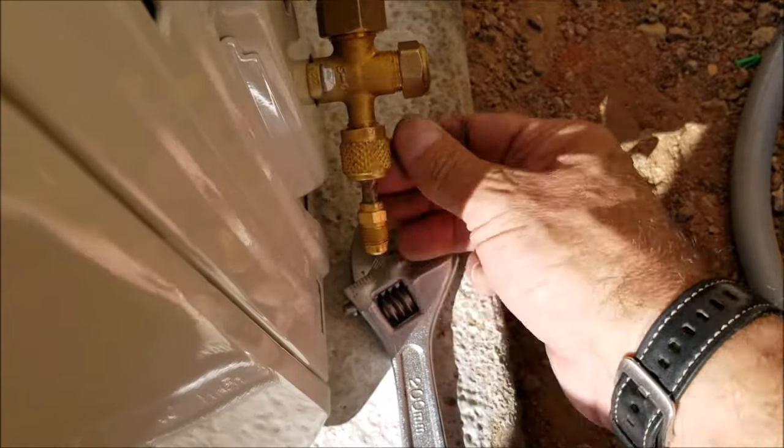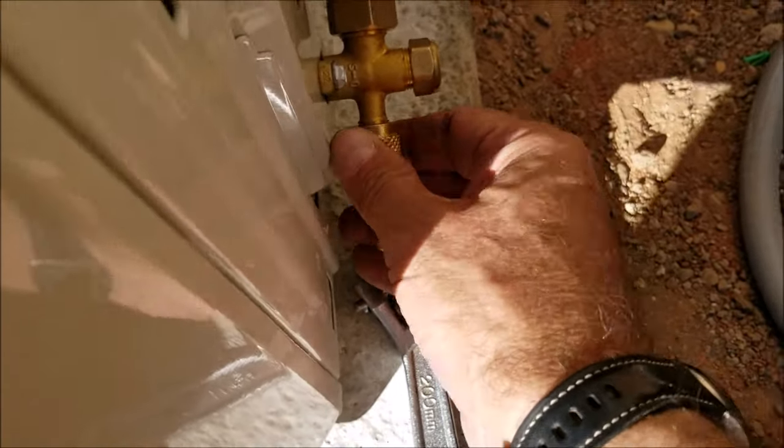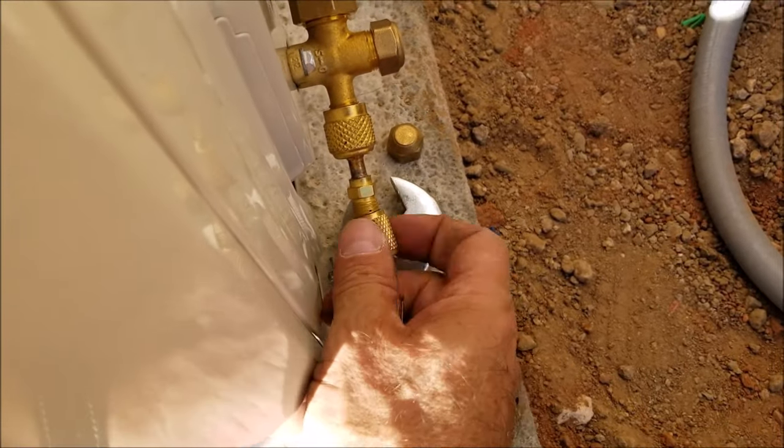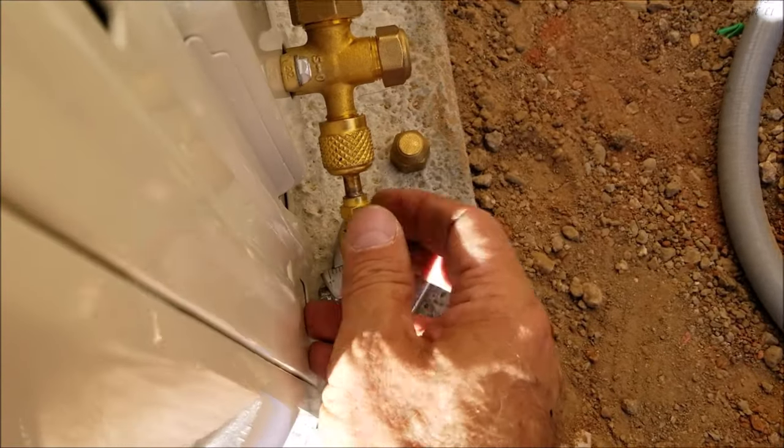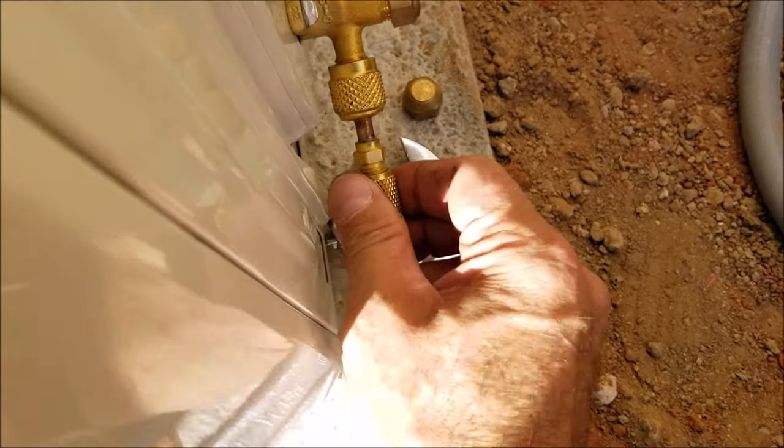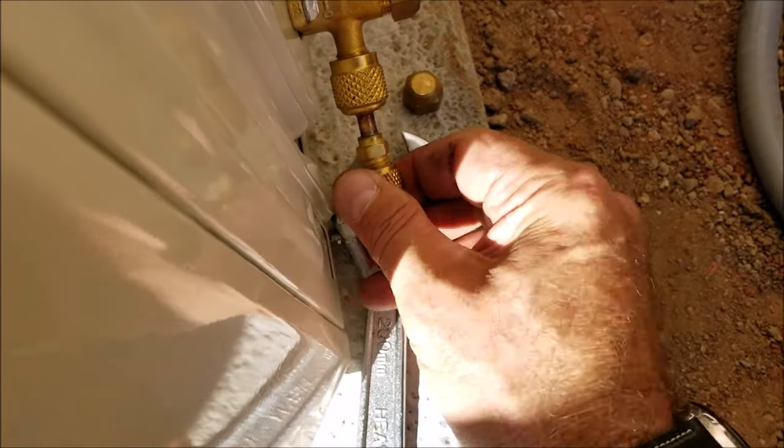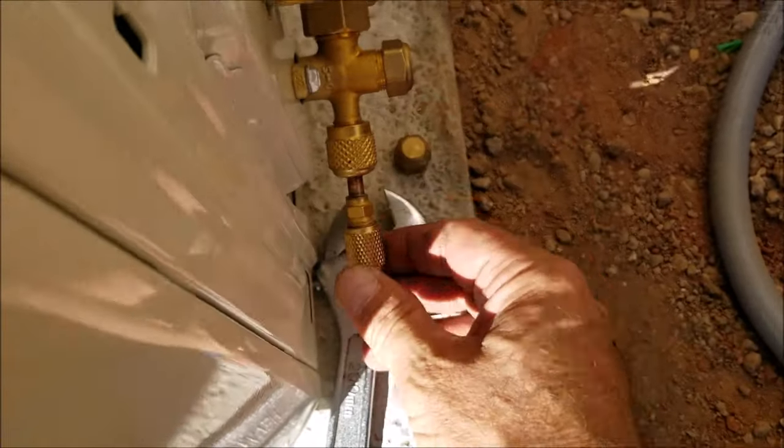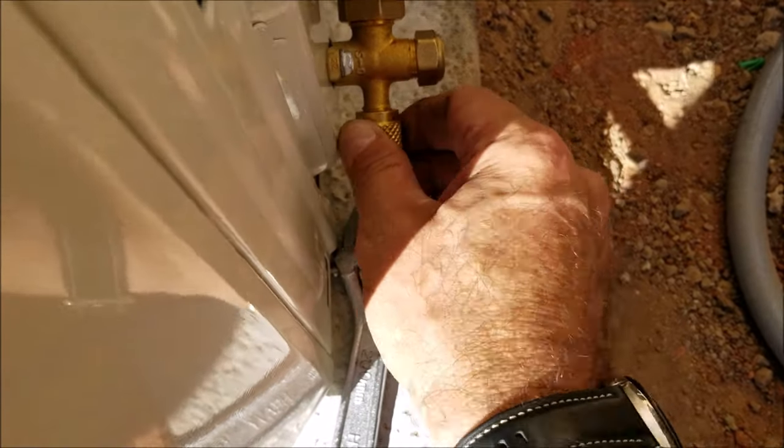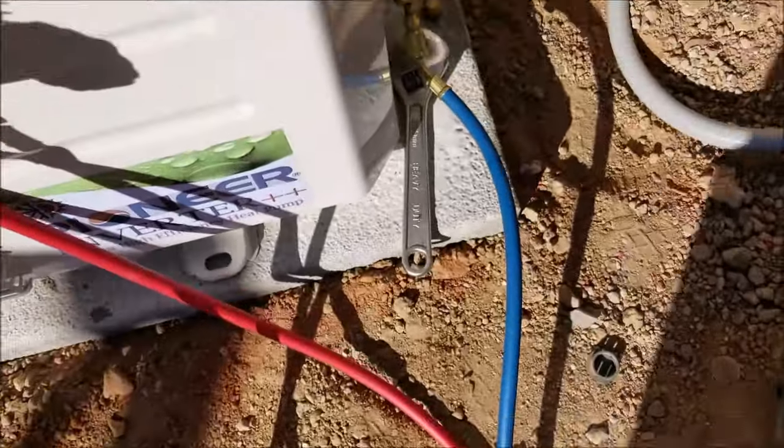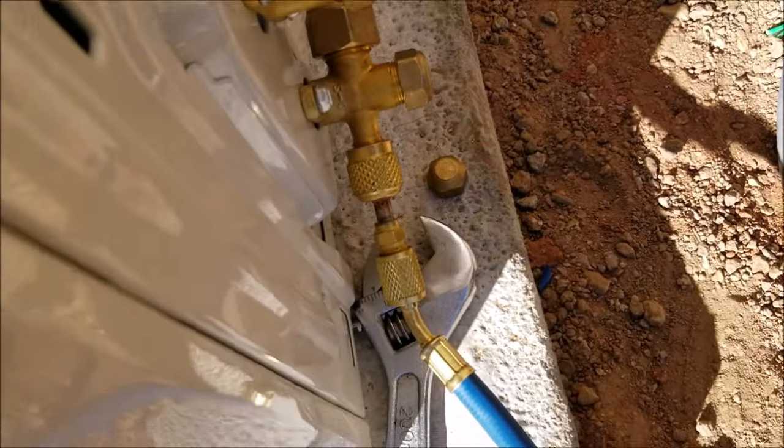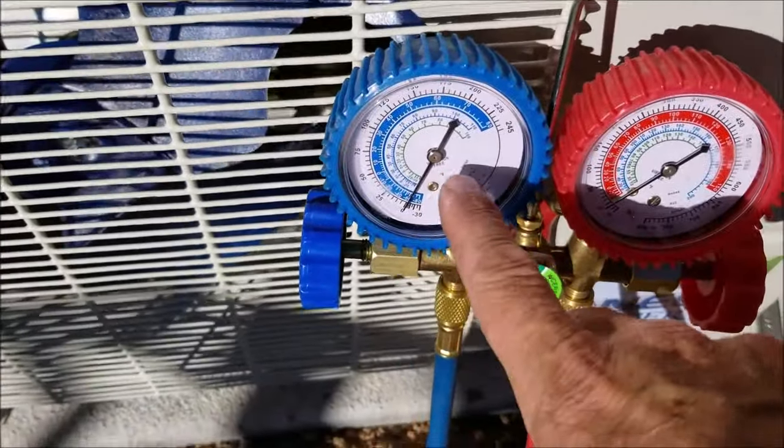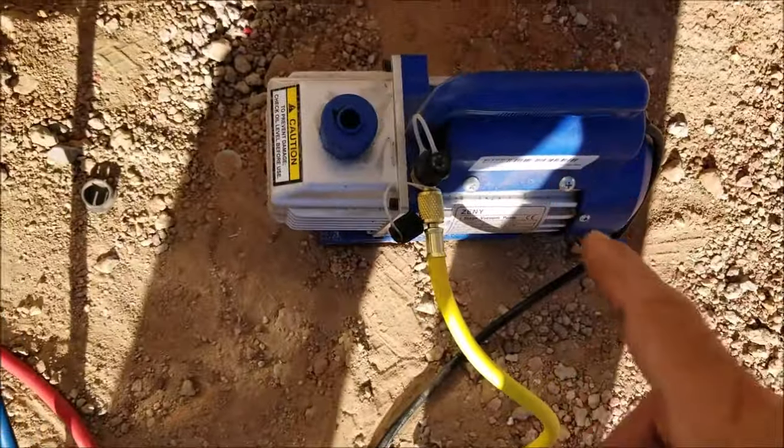So like I said, we're just using a little adapter. Just make sure everything's on there good and tight. Basically, this low pressure line is just hooked up straight to the unit. It's coming right up here to this blue gauge, which is what we're going to be using, and we've got to run it over to our vacuum pump.